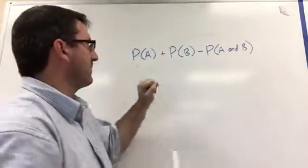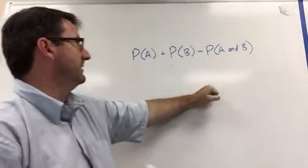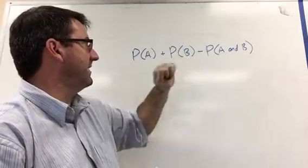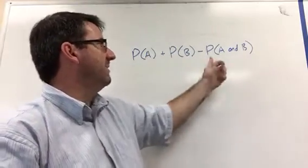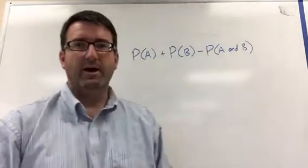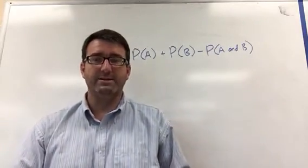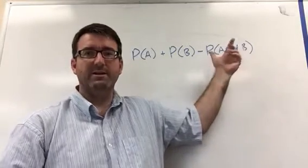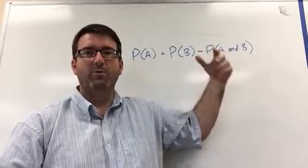So remember the OR probability formula: the probability of event A plus the probability of event B minus the probability of event A and B occurring at the same time. This is only relevant if we have overlapping events.